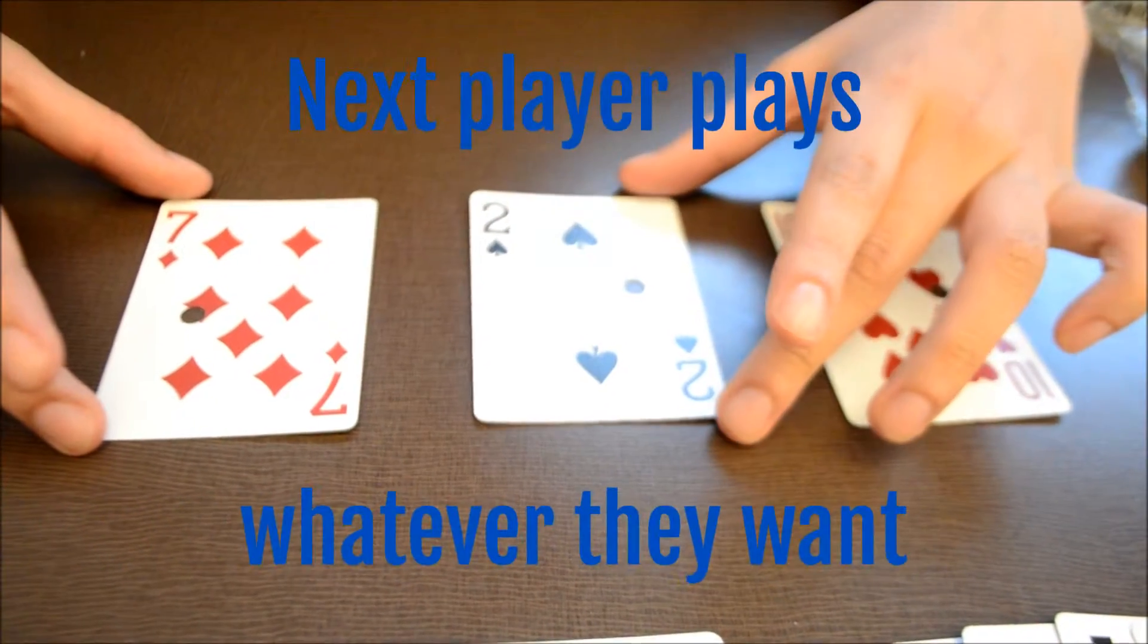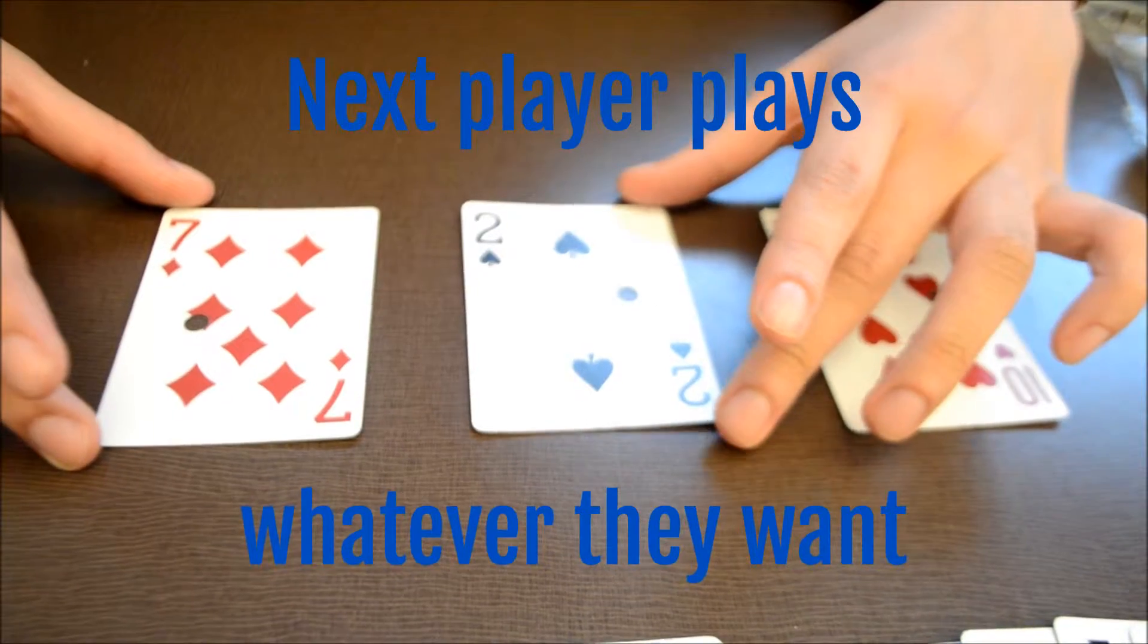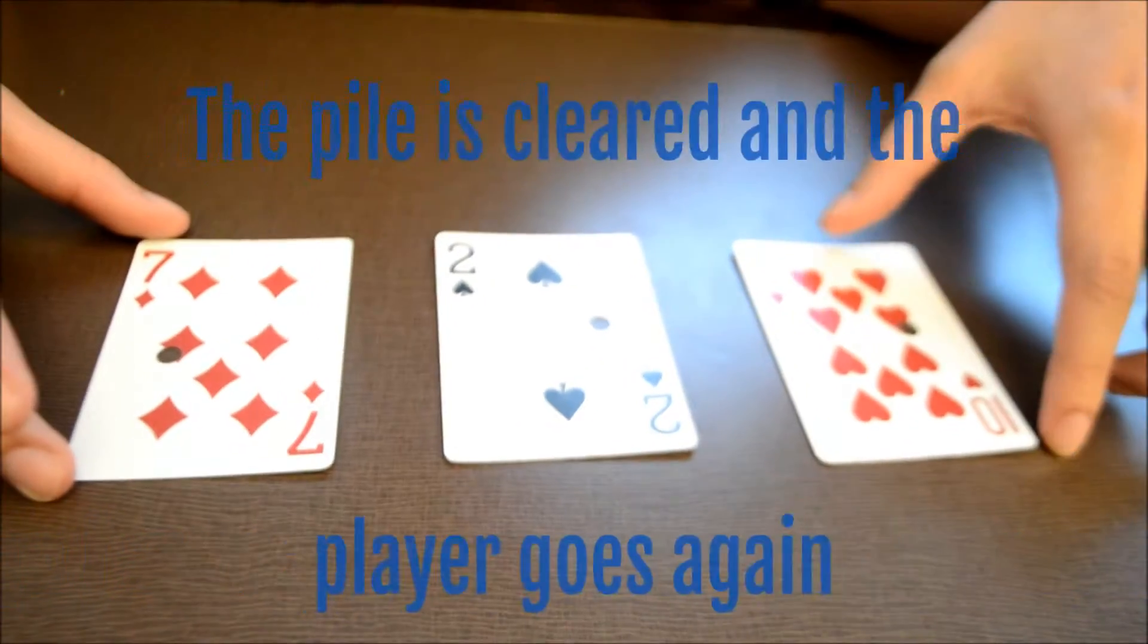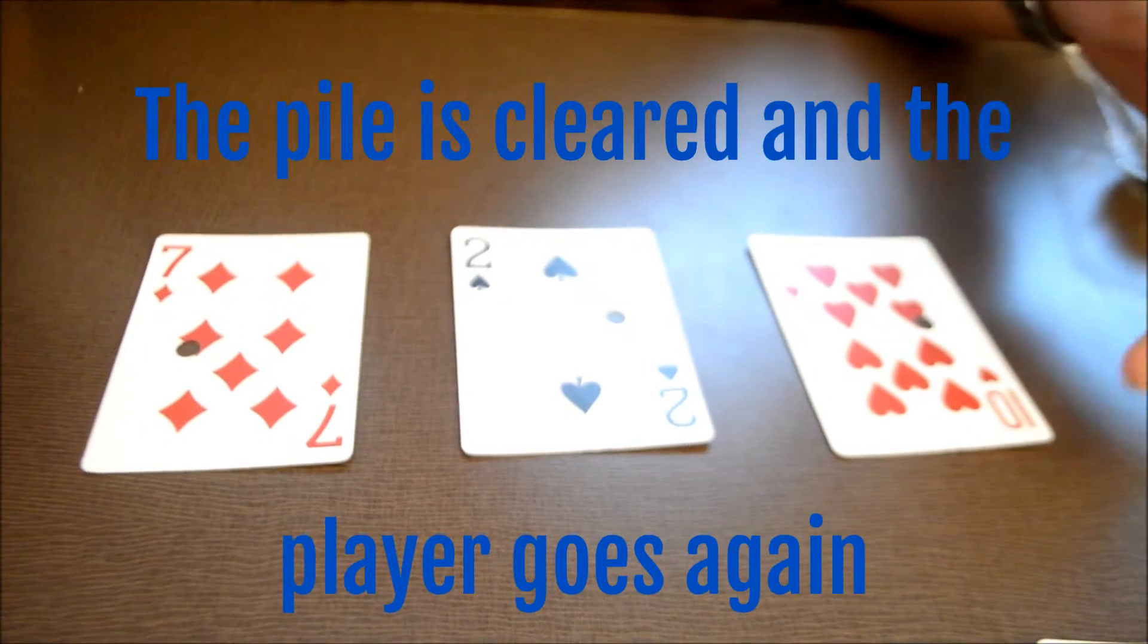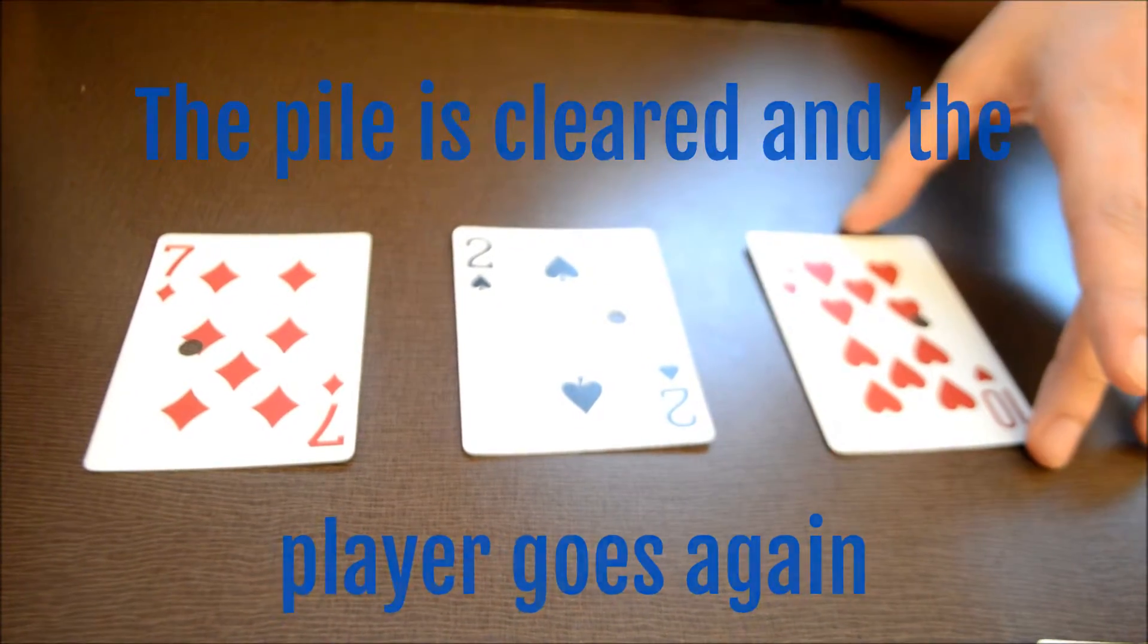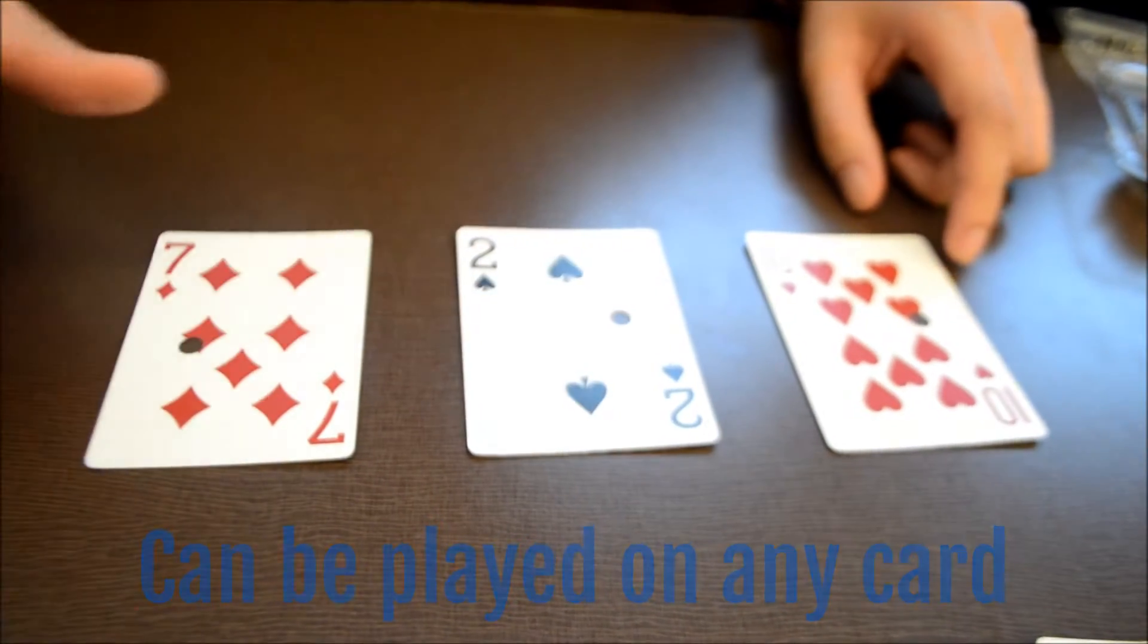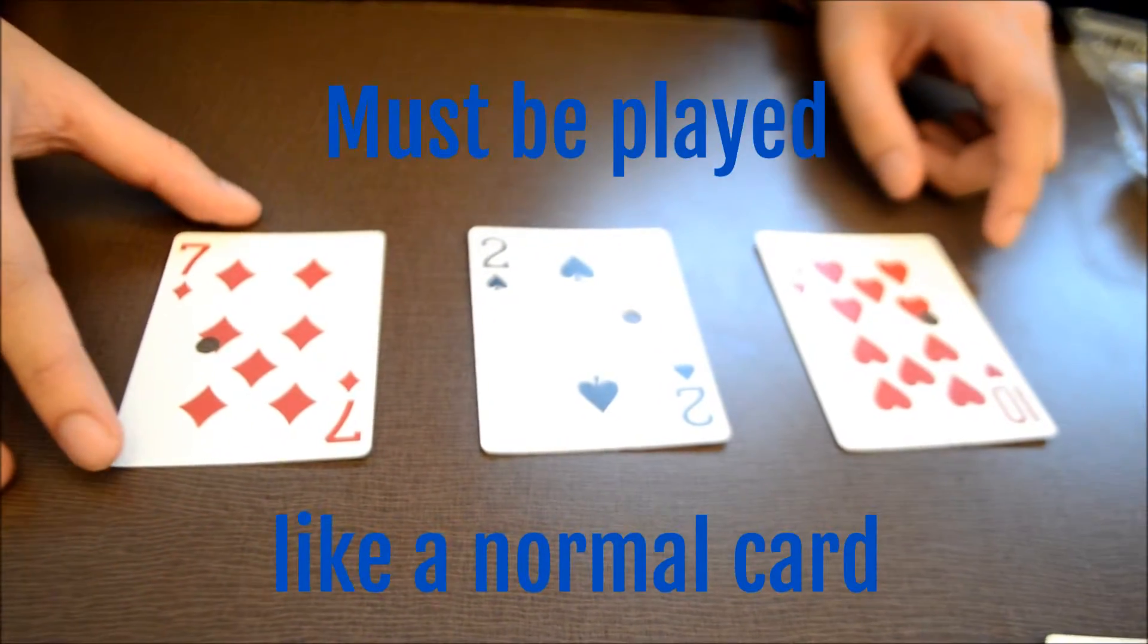And when you play a two, the next person can play anything. And when you play a ten, that clears the pile in the middle and you get to play again. Two or ten can be played at any time, while seven has to be played in numerical order.